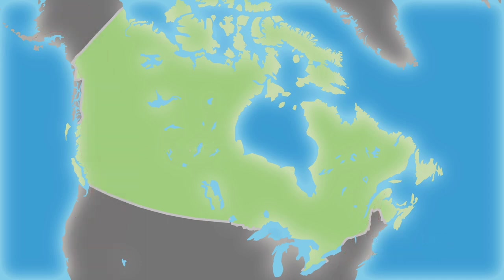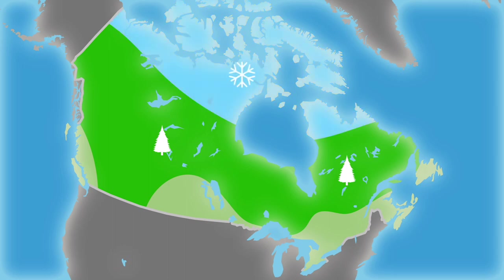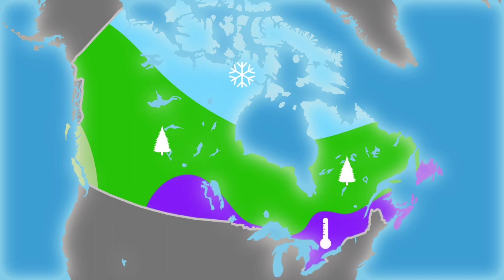A large part of Canada belongs to the sub-arctic climate zone due to the country's location. In this area, there are huge coniferous forests. Further north, tundra climates are found. The southeast and parts of the south have a continental climate, with hot summers but very cold winters. East of the Rocky Mountains, a dry steppe climate prevails. On the west coast, the climate is oceanic.